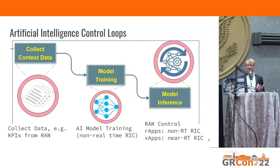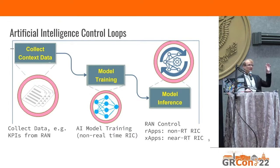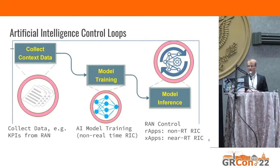So how does it work? You collect context data from the RAN — key performance indicators — put them in a database, or use all the data to train an AI model. This happens in the non-real-time RIC, in non-real-time, and can happen offline. Once the model is trained, you can adapt or control the network through the R-apps or X-apps.